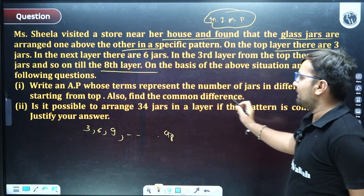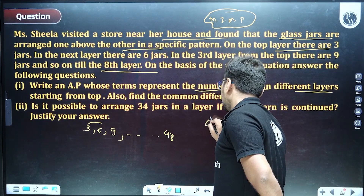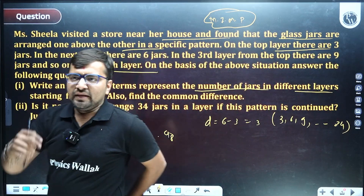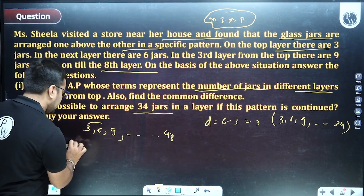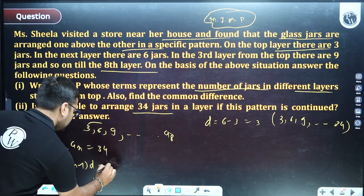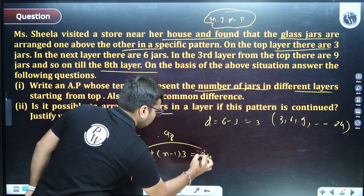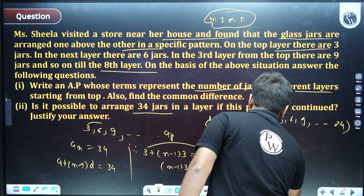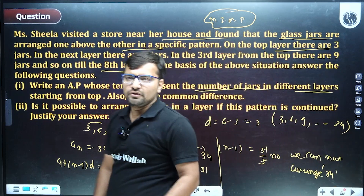Write the AP whose terms represent the number of jars in each layer starting from the top, and find the common difference. The common difference is a2 − a1 = 3, and the AP is 3, 6, 9, ..., with the last term being 24 (eighth layer). Now, is it possible to arrange 34 jars in this pattern? Substitute into an = a + (n−1)d: 3 + (n−1) × 3 = 34, so n−1 = 31/3, which is not a natural number.